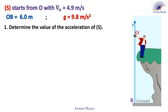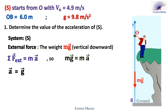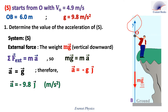Number 1: Determine the value of the acceleration of S. Our system is the stone S. The external force acting on the stone is only the weight mg, which is directed vertically downwards. Let's use Newton's second law. So mg equals ma, the m's cancel out, then a equals g. The gravitational acceleration is directed vertically downwards and the positive y direction is vertically upward. Then a equals minus g·j. Replace g by 9.8. Then a equals minus 9.8·j. Therefore, the value of the acceleration of the stone is minus 9.8 meters per second squared.